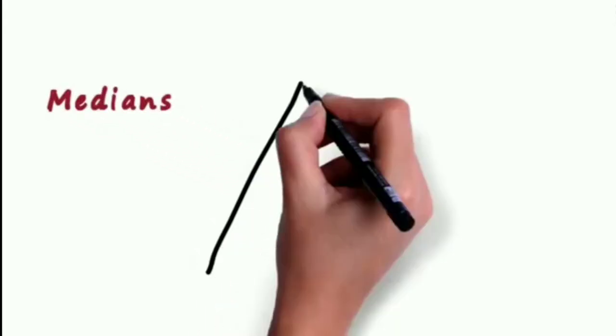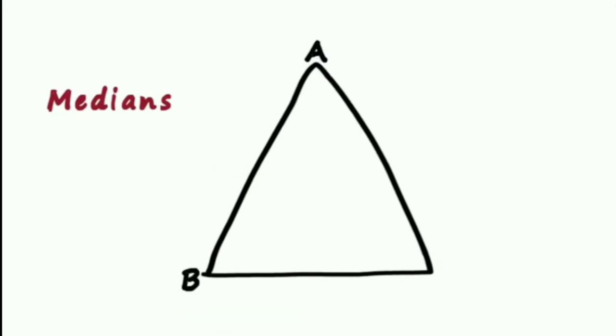Hi, in this video we are going to see medians. So what are medians? Let's see one triangle ABC. We have point D on segment BC such that BD equals DC. It means D is the midpoint of segment BC.